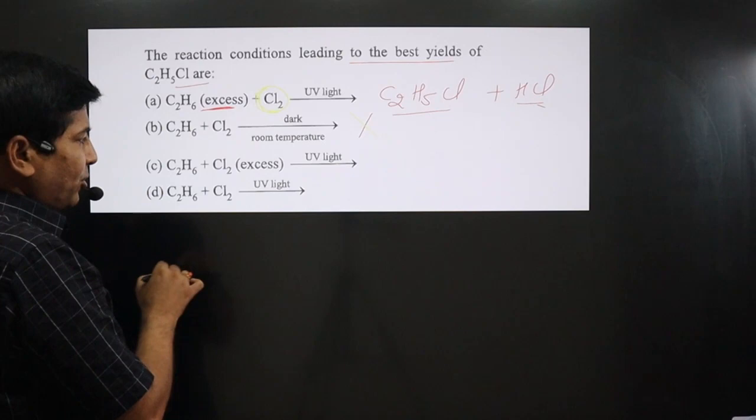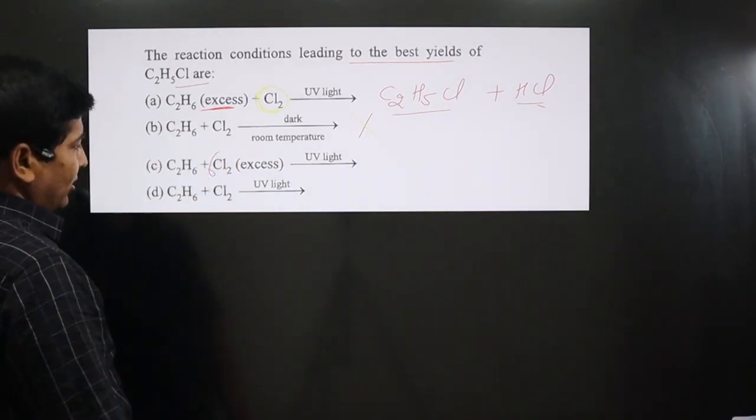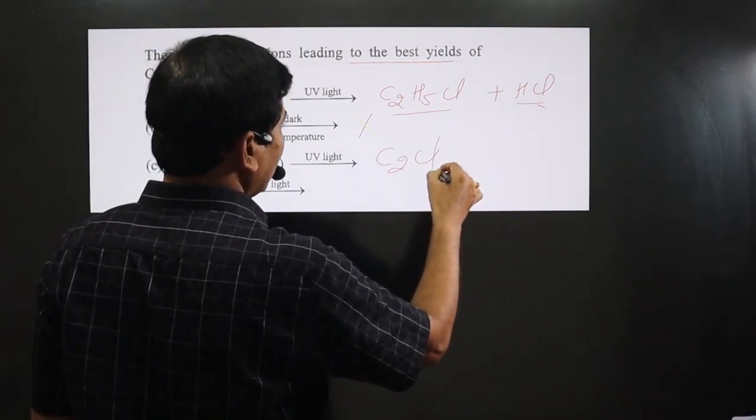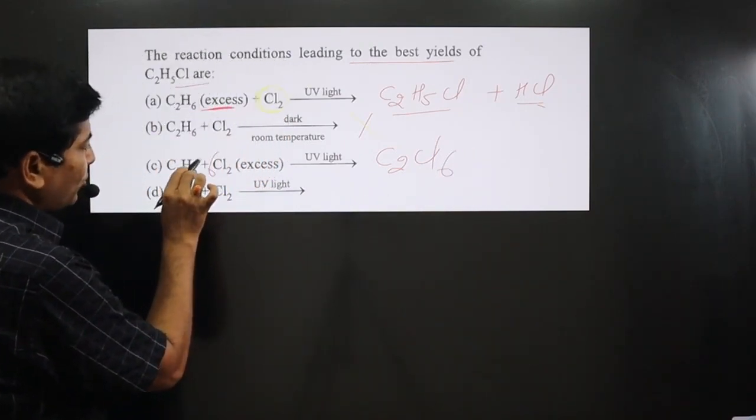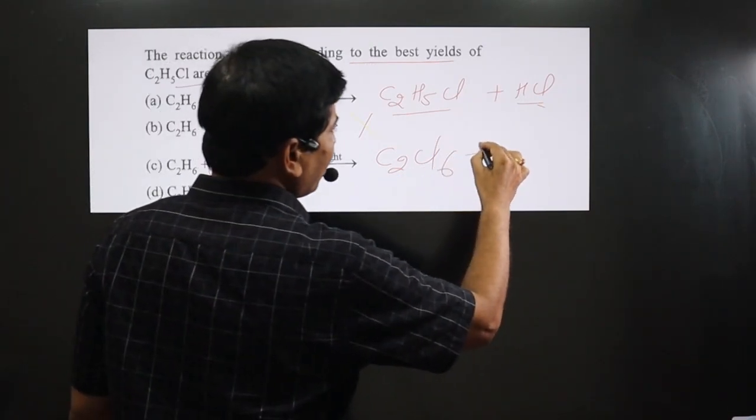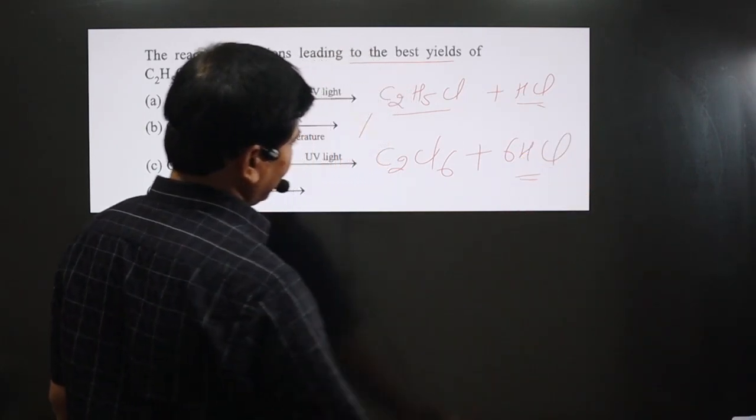Six hydrogens are there, so I take 6 Cl. What will happen? It will form C2Cl6 and 6 hydrogen and 6 Cl will combine together forming 6 HCl.